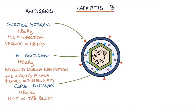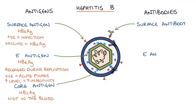Next, let's move on to talking about the antibodies. Remember that antibodies are produced as part of the immune response, with B cells coming into contact with antigens and producing antibodies against those antigens. Just as there were three antigens involved in the hepatitis B virus, there are also three antibodies that correspond to these antigens: a surface antibody, an E antibody, and a core antibody.